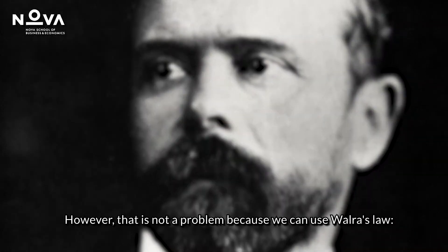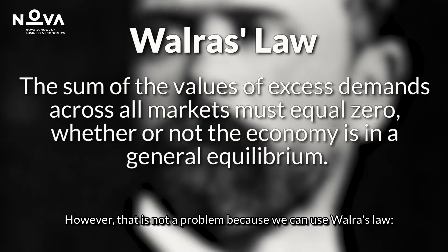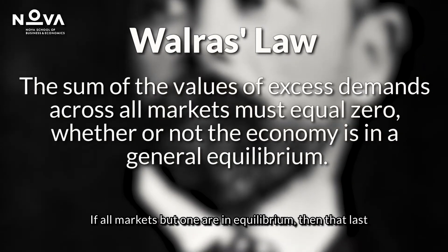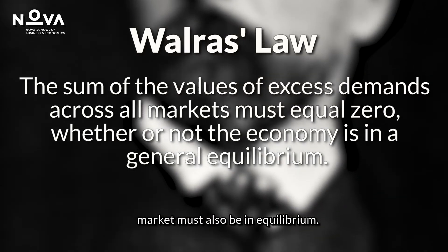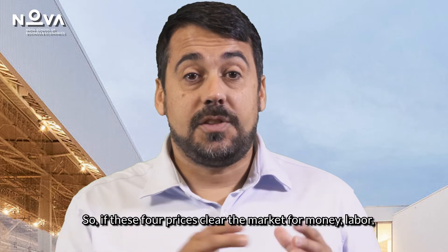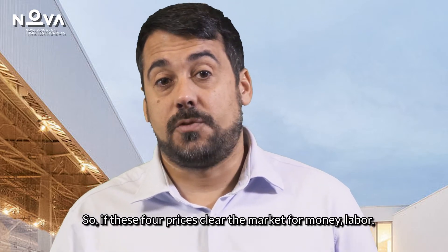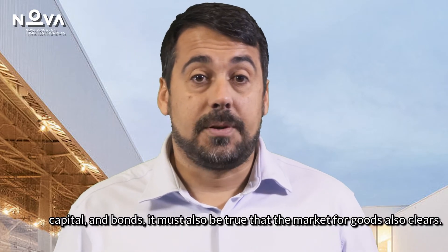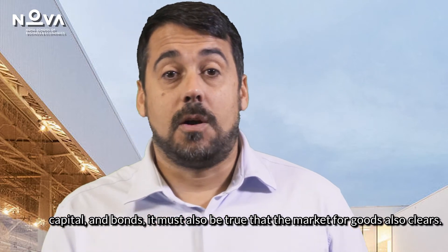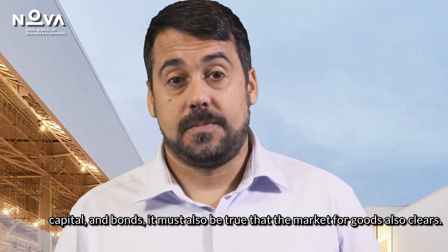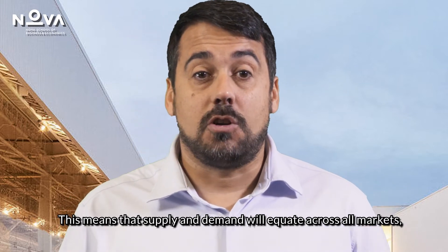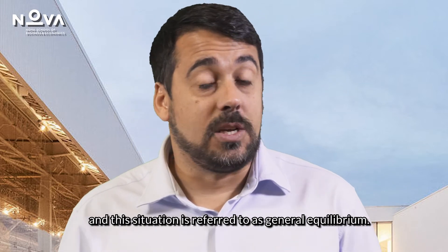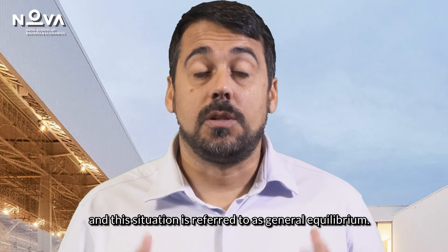However, that is not a problem because we can use Walras's law. If all markets but one are in equilibrium, then that last market must also be in equilibrium. So if these four prices clear the markets for money, labor, capital, and bonds, it must also be true that the market for goods also clears. This means that supply and demand will equate across all markets, and this situation is referred to as general equilibrium.